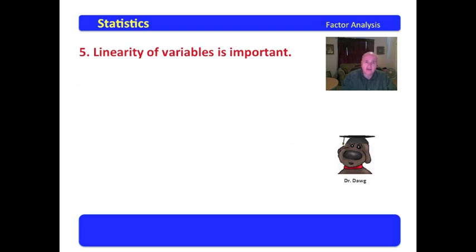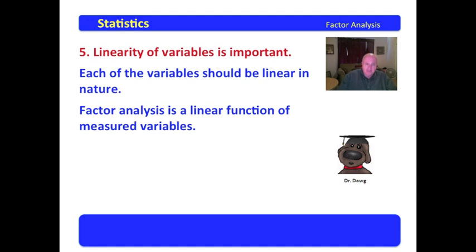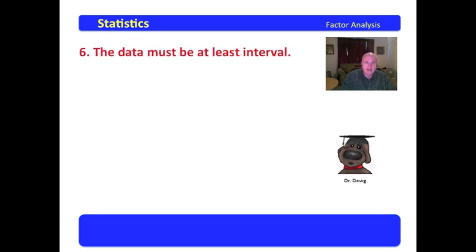You must have linearity of variables. This is very important. Each of the variables should be linear in nature. That means that when you plot them out, they roughly graph into a line either going up or going down. Factor analysis is a linear function of measured variables. So the variables must be linear in nature as well.